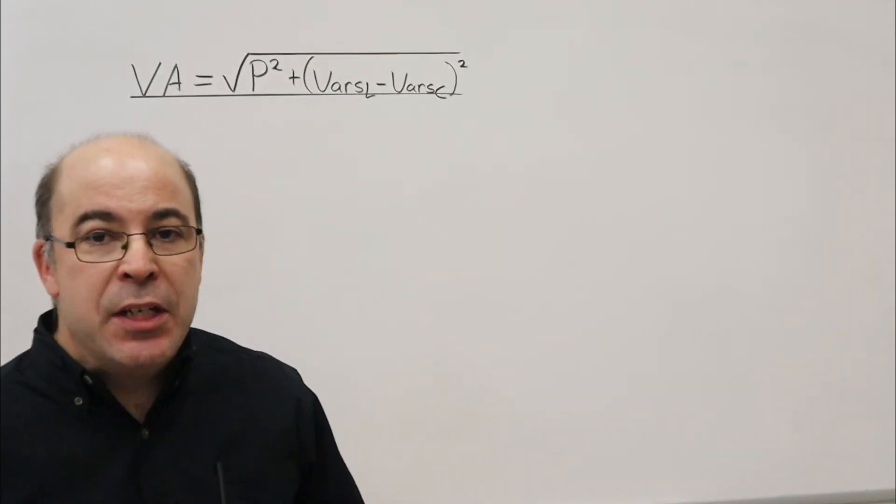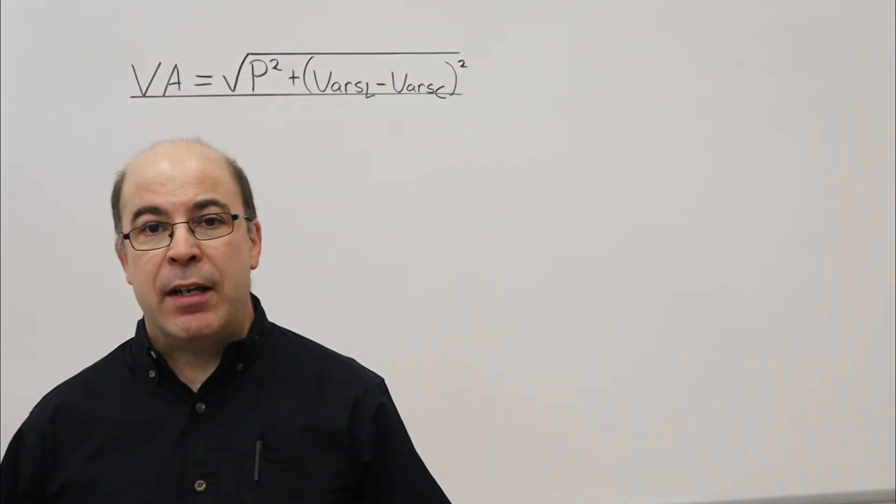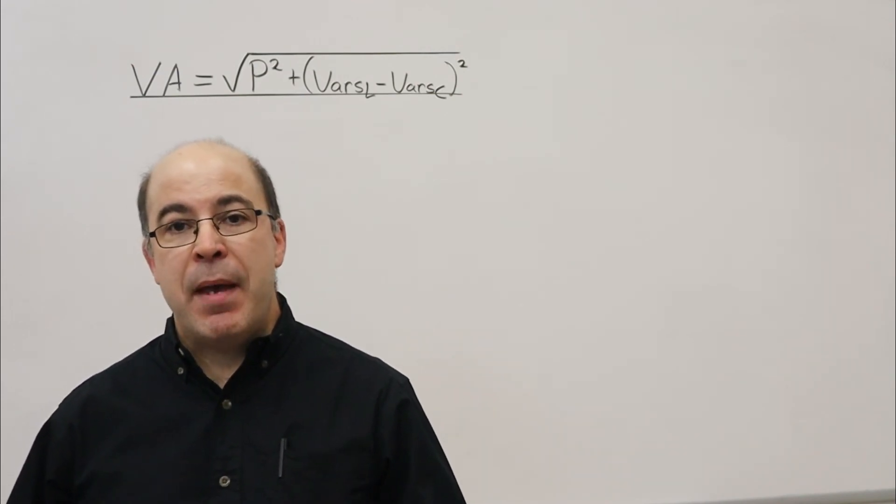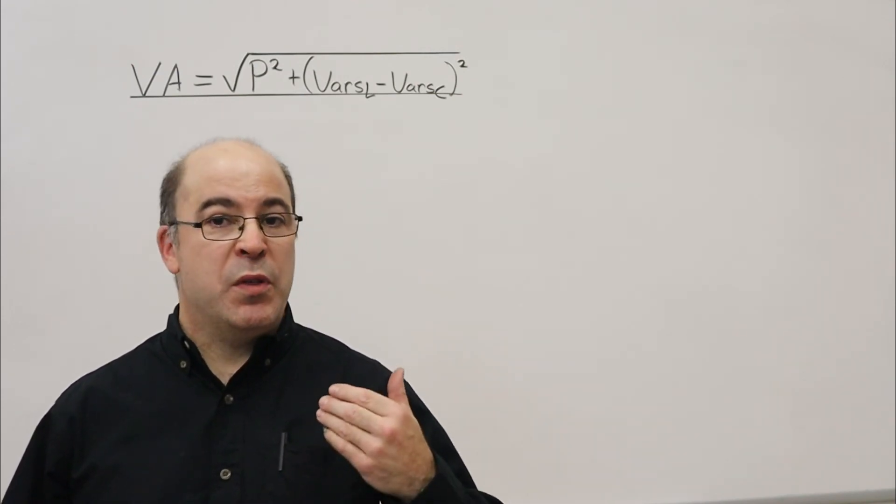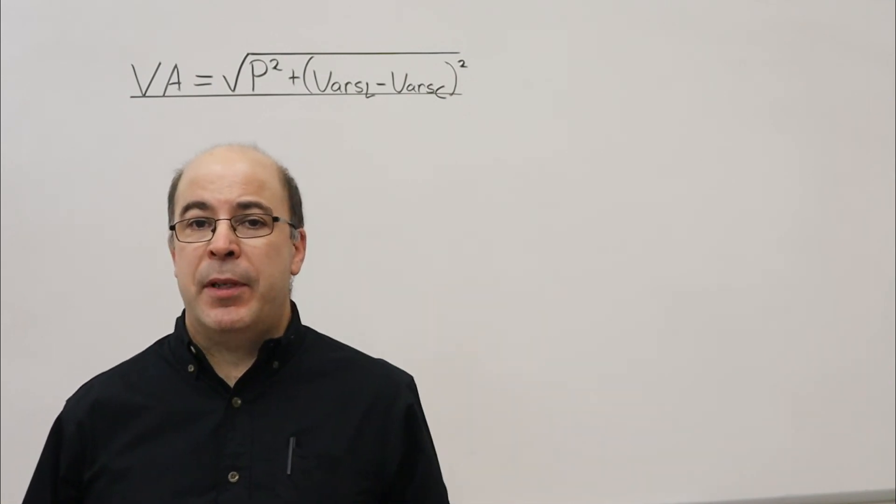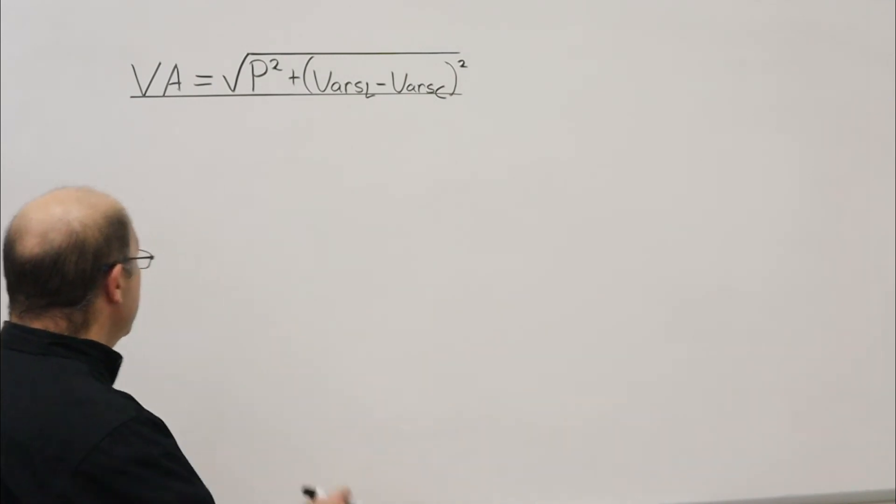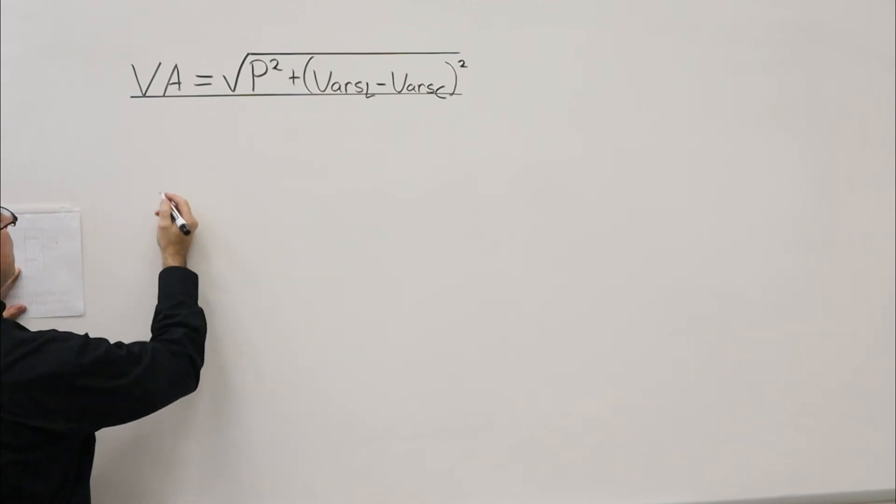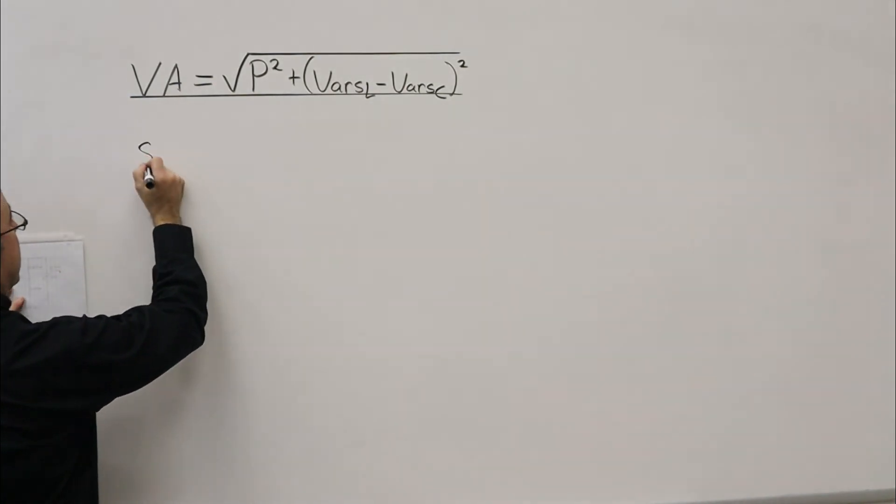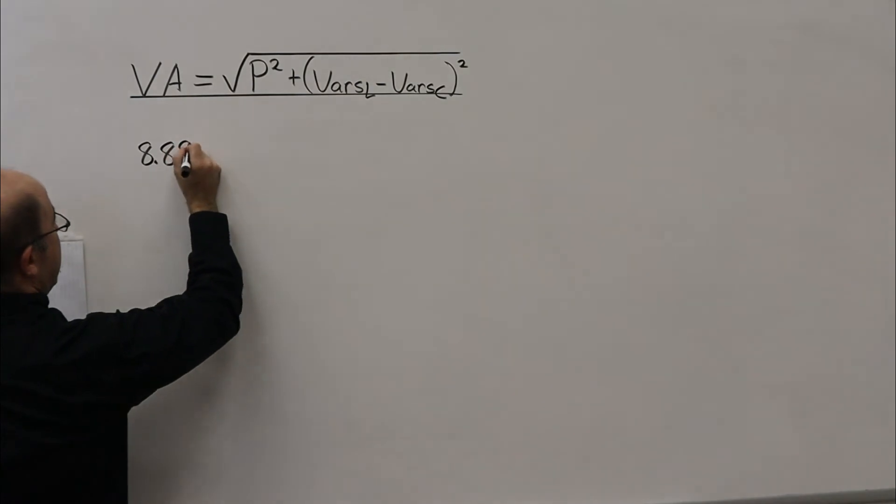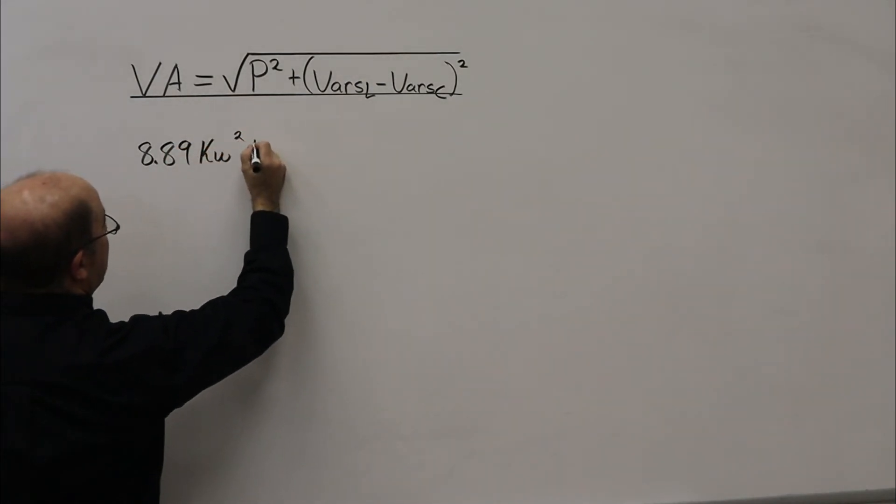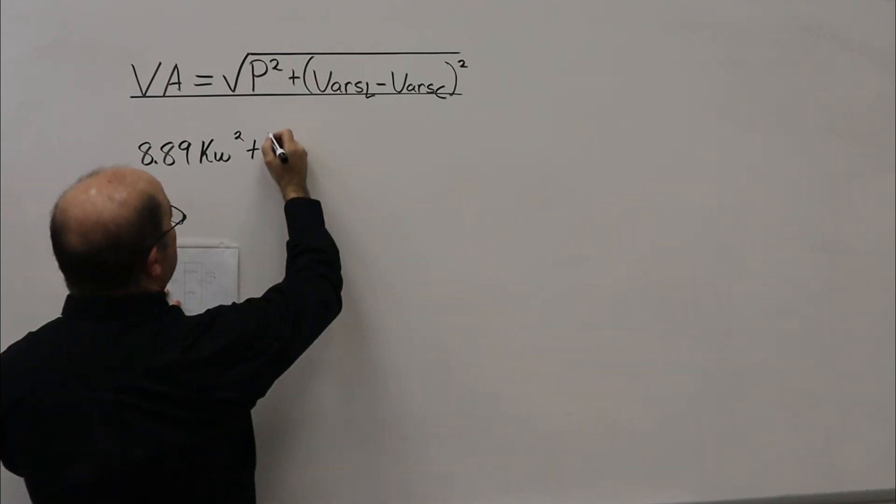Now that we've tabulated each device by category—resistors, inductors, and capacitors—it's simply a matter of inputting those values into our formula. For all the resistors, we take 8.89 kilowatts squared, plus open our brackets.